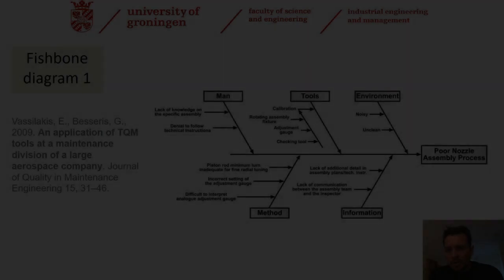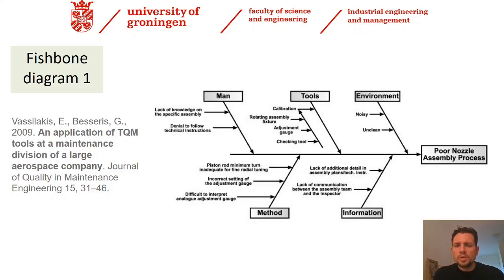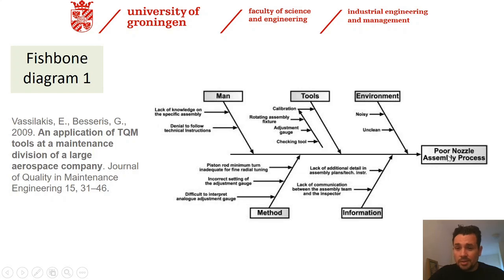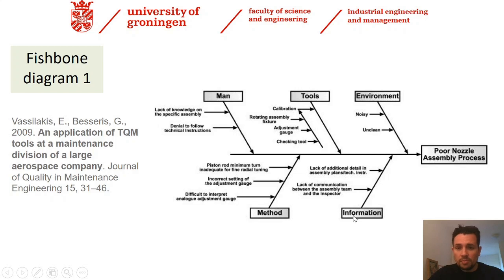Via Google Scholar and Mendeley, I have found the three most cited papers that make use of fishbone diagrams in some engineering field. For instance, here we have the Journal of Quality in Maintenance Engineering. This fishbone diagram addresses the issue of poor nozzle assembly process. Classically, we have five branches: man, tools, environment, method, and information. Each of these branches, or bones, also has potential sub-causes.